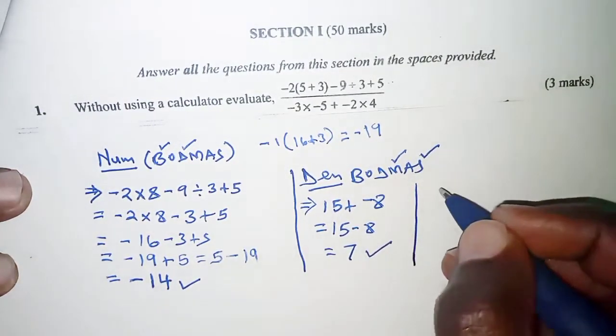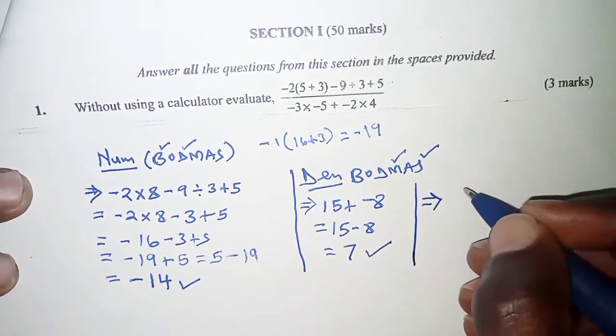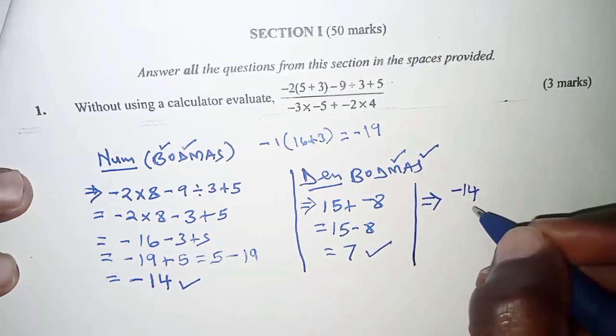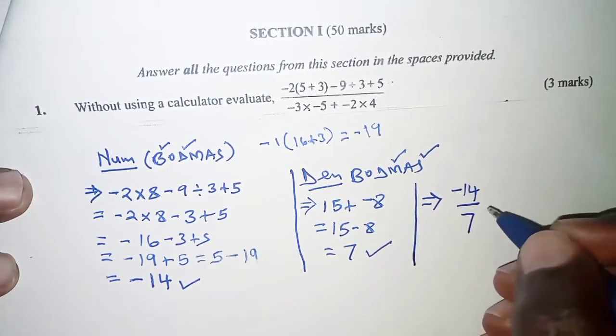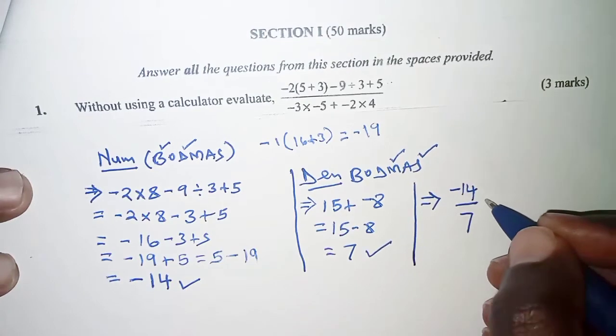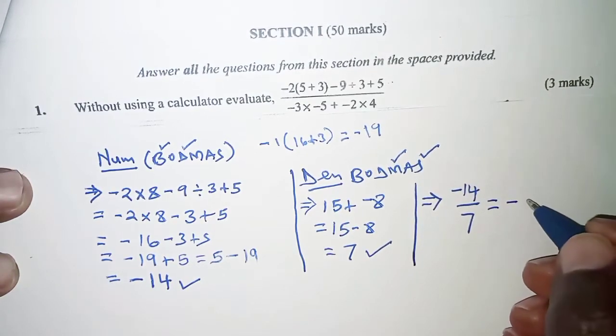At this particular point, we can now have the numerator. That implies that the numerator, which is negative 14 divided by 7, should give us negative 2.